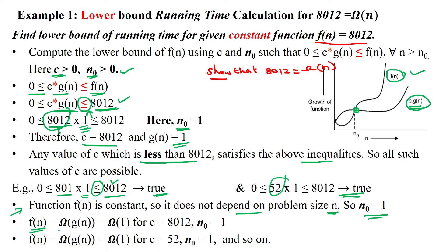So we can say f(n) equal to big omega of g(n) equal to big omega of 1, because our input size is not changing the given function value. So for this, c equal to 8012 and n₀ equal to 1 from this value. When you are taking the constant function, f(n) equals big omega of 1 for c equal to 52 and n₀ equal to 1. So like that, we can keep on deriving with different constant values.